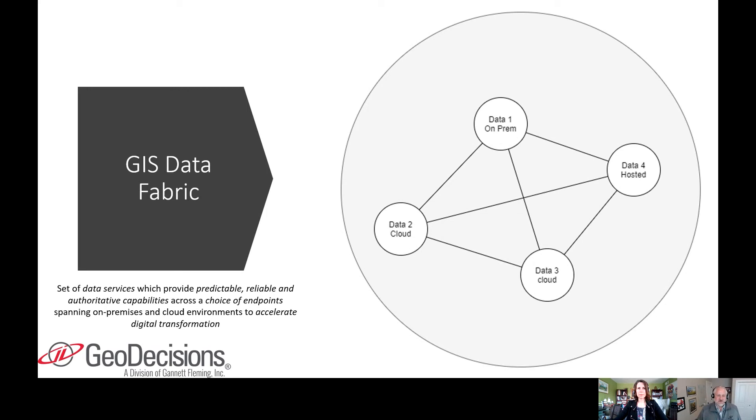We have those capabilities across a choice of endpoints. What are endpoints? Endpoints are basically URLs. I'm going to call your organization's URL, call the REST service, send it a query, and it's going to send me the data back that I need, generally in a JSON or GeoJSON type of packet.